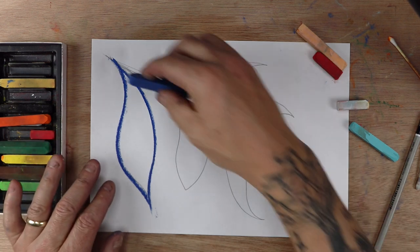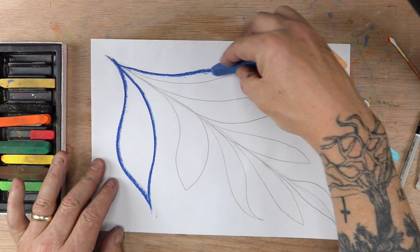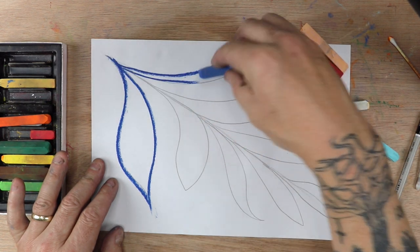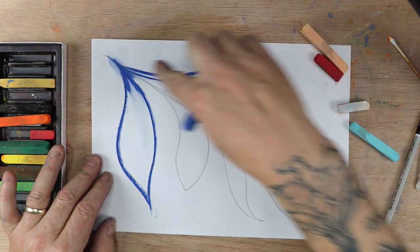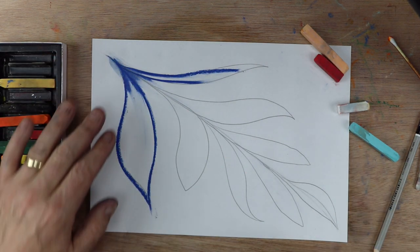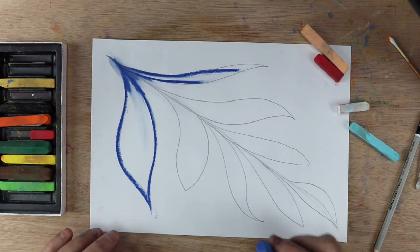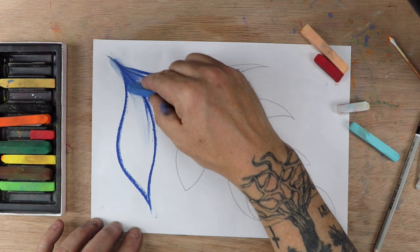So the general principle is that as we go down here, we're going to be smudging down and down the line. But we're also going to be adding some color around too. So it doesn't matter if your smudging goes outside of the frame.